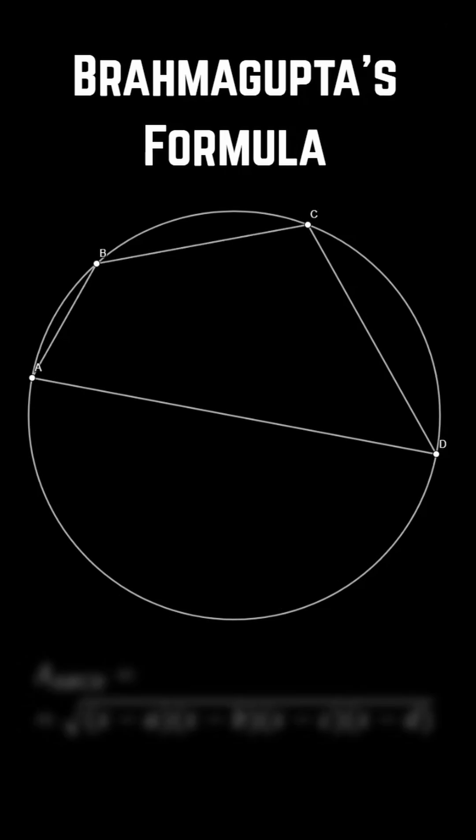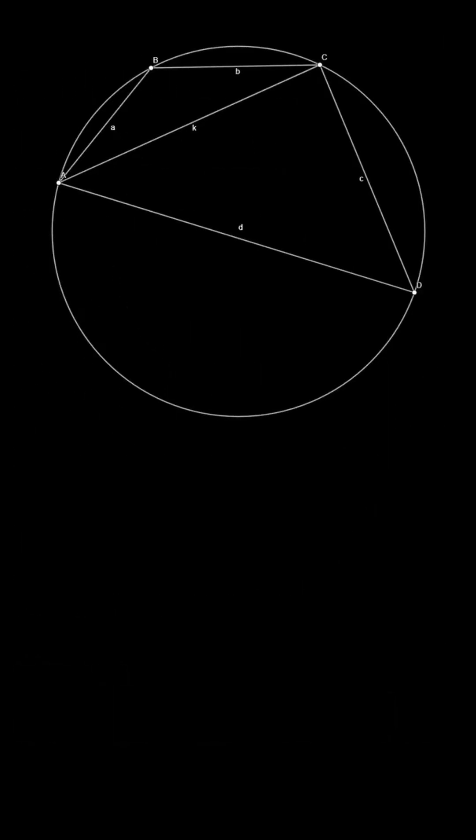Although the proof I'm about to show you is likely not how Brahmagupta himself derived the formula, the proof is a great reminder of how powerful the law of cosines really is. First, we split the quadrilateral into two triangles with a common side being the diagonal of the quadrilateral.